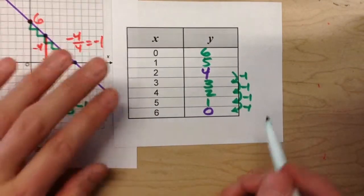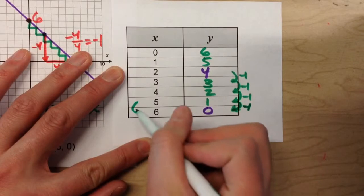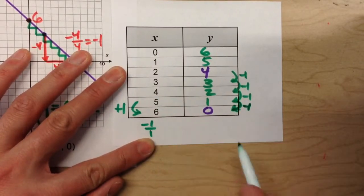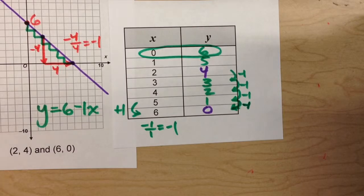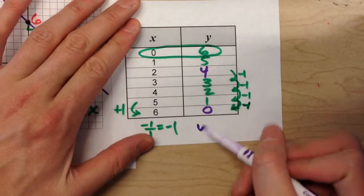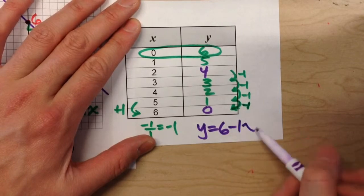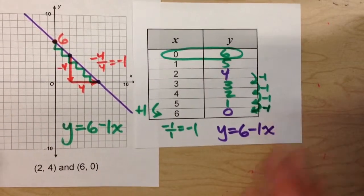So if I want my slope, I know it's going down 1 and over 1. So my slope is negative 1 over 1, which is just negative 1. I know my y-intercept is 6. So my equation would be y equals 6 minus 1x, which is the exact same equation we got using the graph.